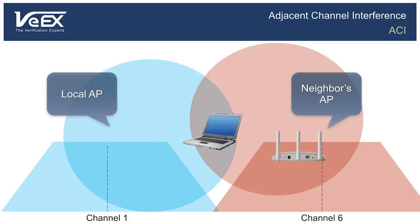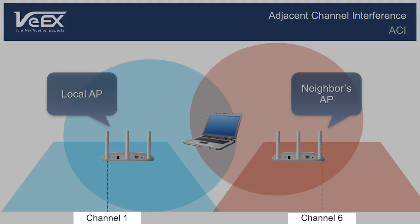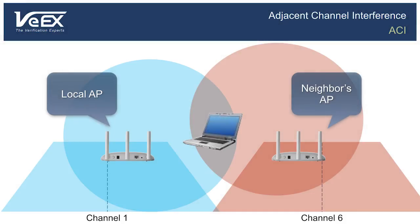Now let's look at what happens when the chosen frequency channel spectrums do not overlap. For example, one access point is still using channel 1, but the other is using channel 6 instead of 3. The data transmission within the two wireless networks will be completely independent, and both will have optimal performance. To continue the conference room analogy, it's like adding a thick brick wall between the two conference rooms — they can now independently communicate within their own group without interfering with the other.